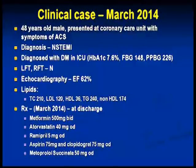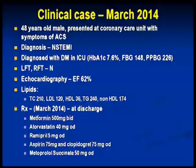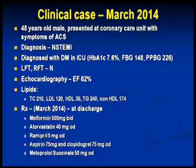This patient presented in March last year — a 48-year-old male in the coronary care unit with symptoms of ACS and was diagnosed as NSTEMI. While in the ICU, he was diagnosed with diabetes with an HbA1c of 7.6, a deranged fasting and postprandial. Liver and renal functions were normal. Echocardiography showed ejection fraction of 62%. Lipids were deranged: total cholesterol 210, LDL 120, HDL 36, triglycerides 240, and non-HDL 174.